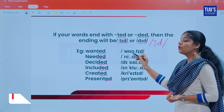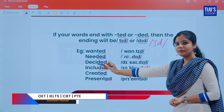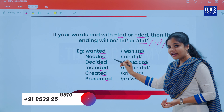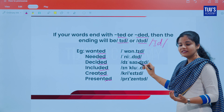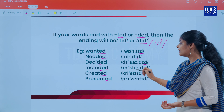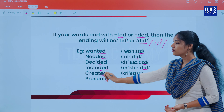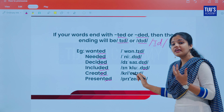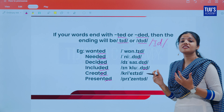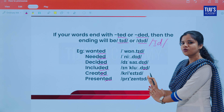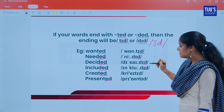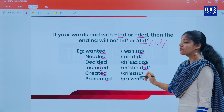Examples of Rule 1: 'wanted' — the ED ending is pronounced /ɪd/. 'Needed' — needed. 'Decided' — decided. 'Included' — included. 'Created' — created. 'Presented' — presented. So: wanted, needed, decided, included, created, presented — all use the /ɪd/ ending.